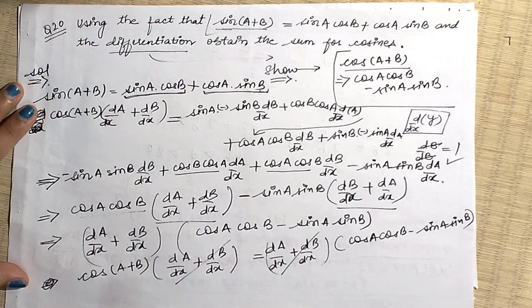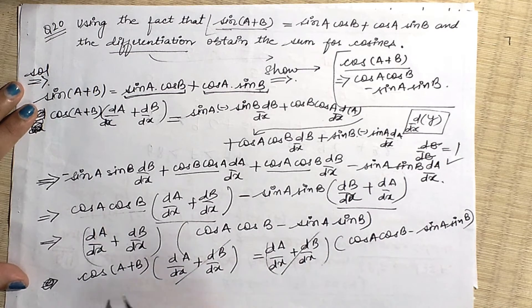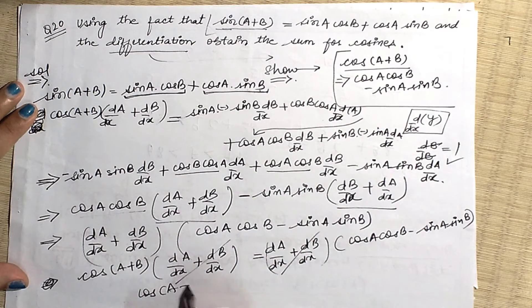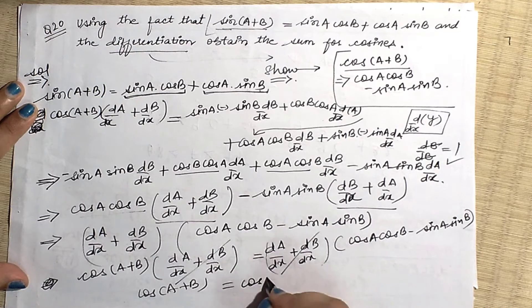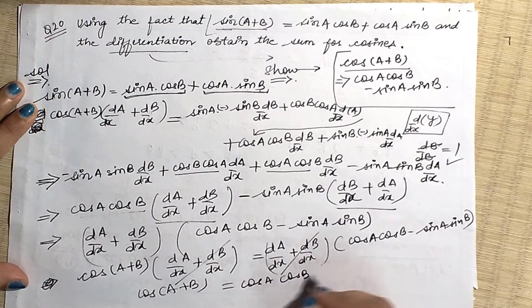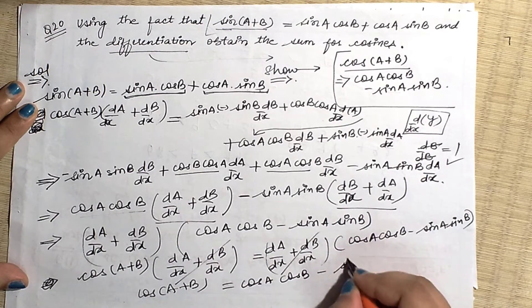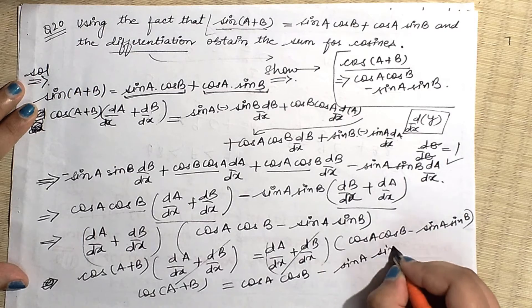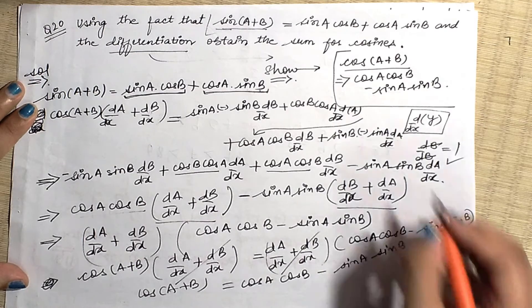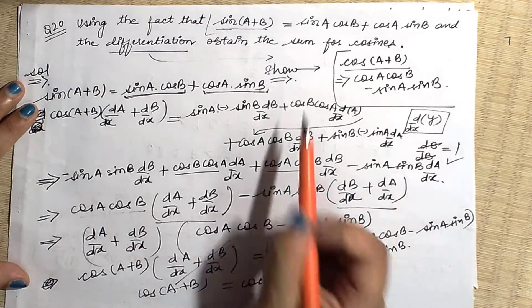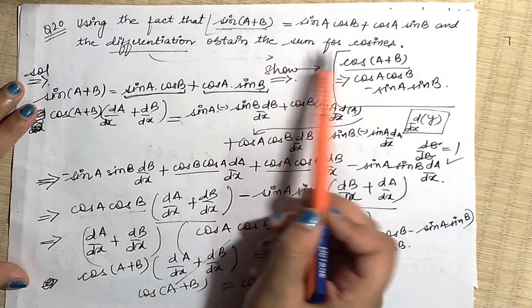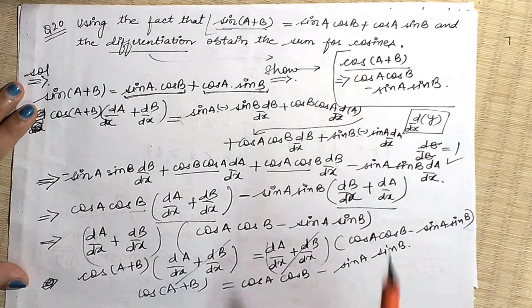After cancellation, we are left with cos(a+b) = cosA cosB − sinA sinB, which is exactly what we wanted to show — the sum of cosines formula. This is the final answer for question 20.